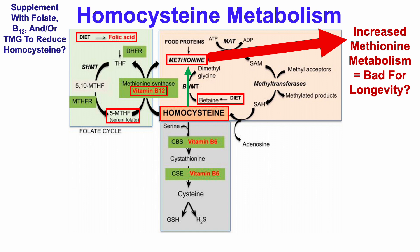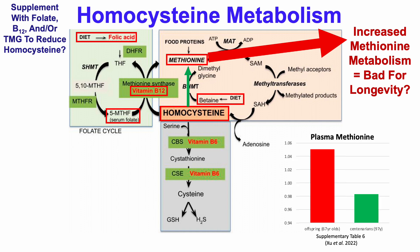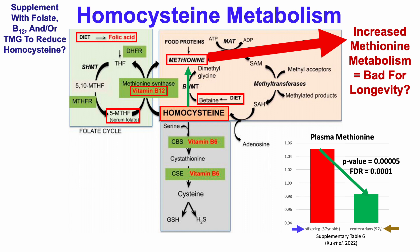That may not be good for longevity, because as we know from animal studies, methionine restriction — not an increase in methionine — extends lifespan. Also in human data, plasma levels of methionine in centenarians (average age 97 years) were significantly lower when compared with their offspring who had an average age of 67 years. So centenarians had relatively lower levels of plasma methionine when compared with people who were 30 years younger.